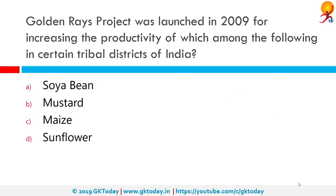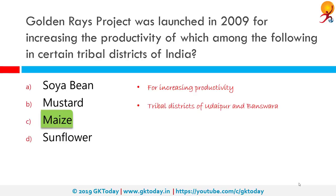Golden Race Project was launched in 2009 for increasing the productivity of which crop in tribal districts of India? The correct answer is maize — for increasing productivity in tribal districts namely Udaipur and Banswara. The Rajasthan state government launched the Golden Race project from Kharif 2009 in public-private partnership mode. Quality seeds from leading private sector companies were procured by the state government. Extension and market support was provided by private sector companies. More than 1 million farmers have benefited and productivity of maize has improved substantially.